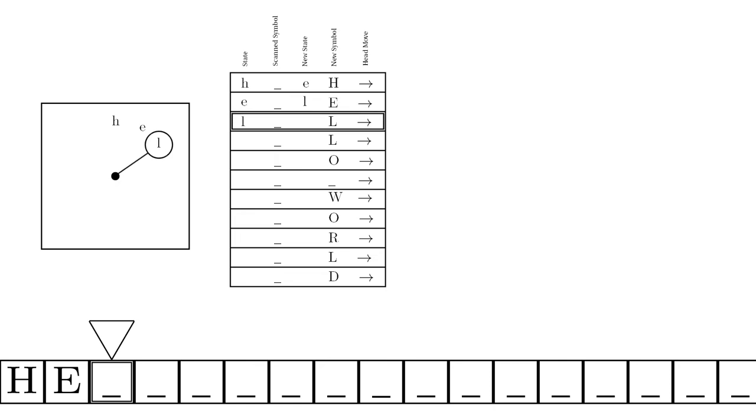This next state is a little trickier because after writing the first L, we want to write a second L. But we can't keep the machine in the same state because then it would never leave that state, keep writing Ls forever. So there need to be two separate states, one for the first L and one for the second L.